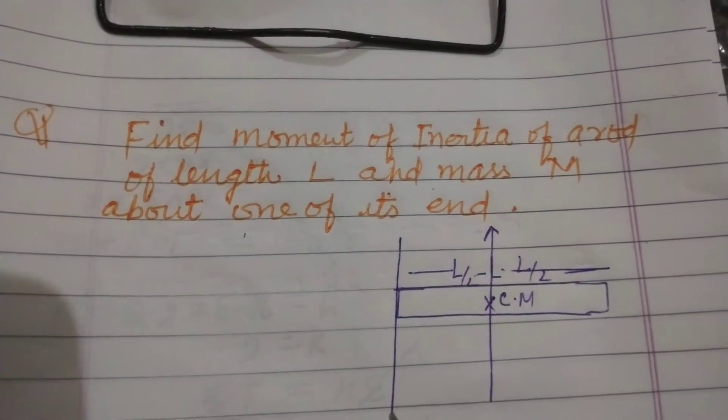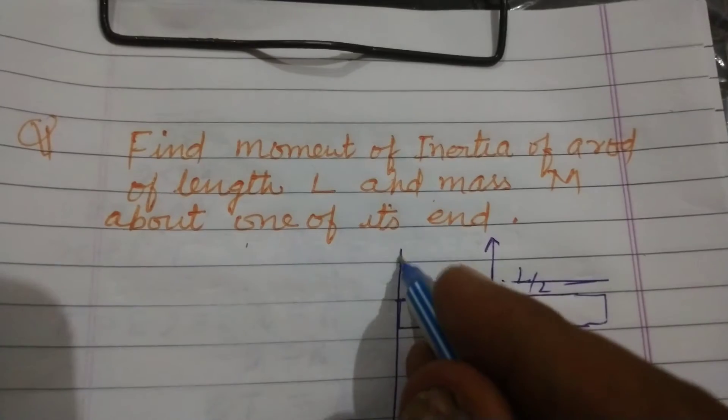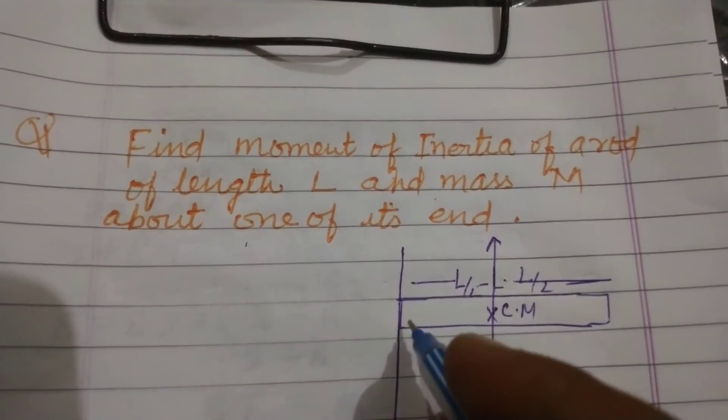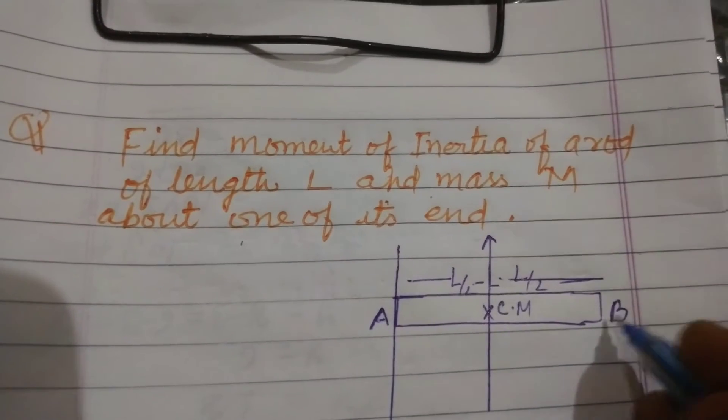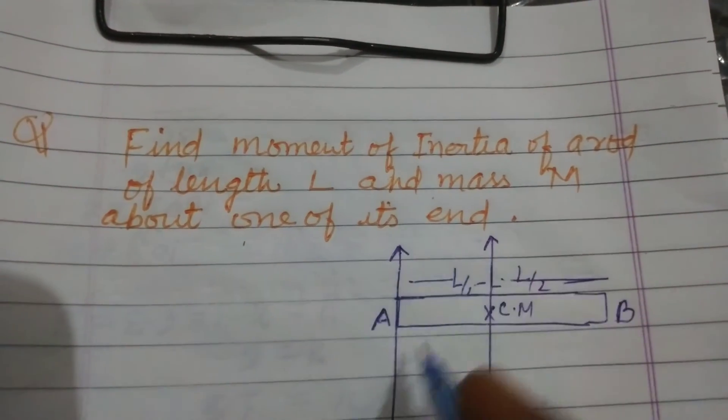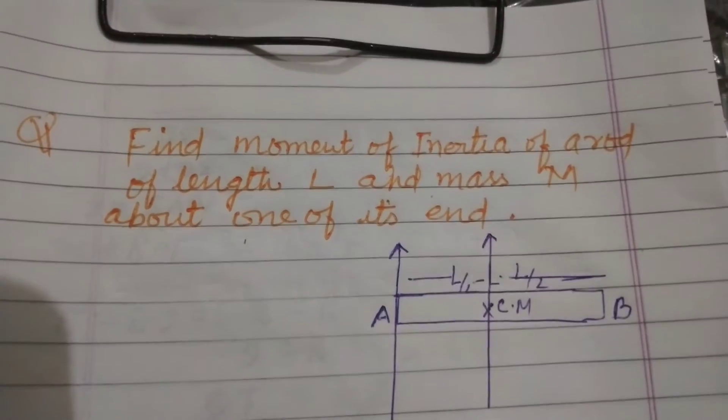And we take an axis passing through one of the ends of the rod, AV. And we want to find out the moment of inertia of this rod about this axis.